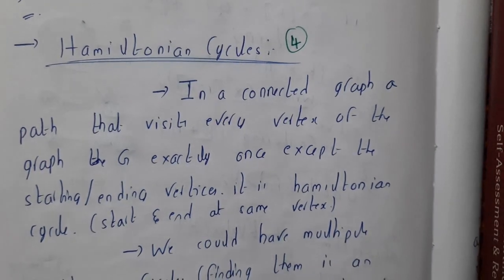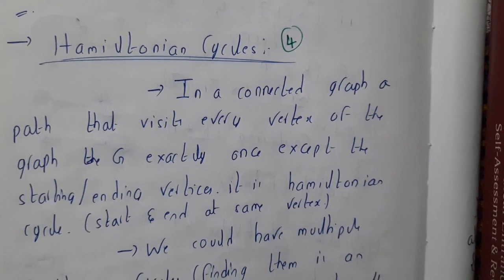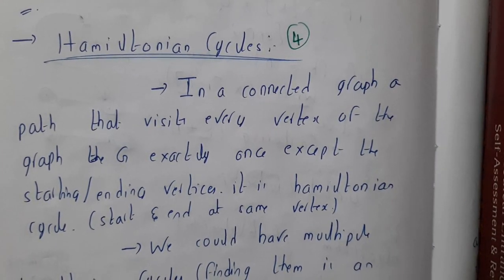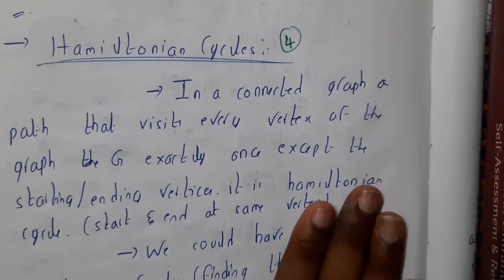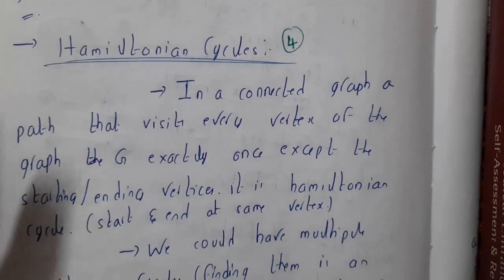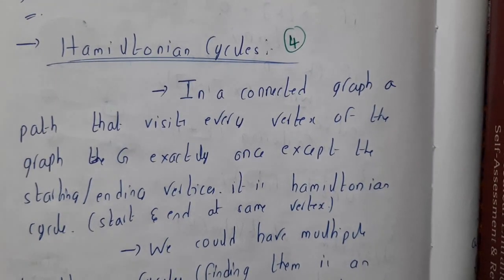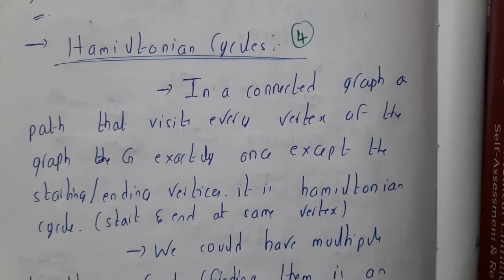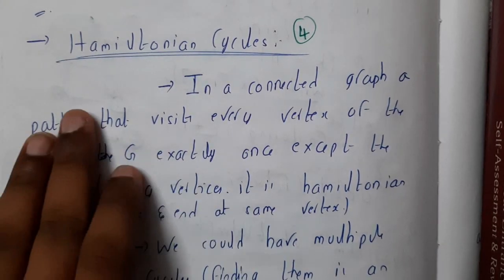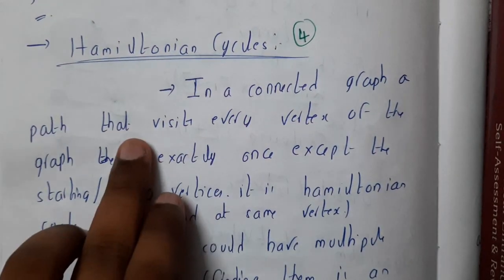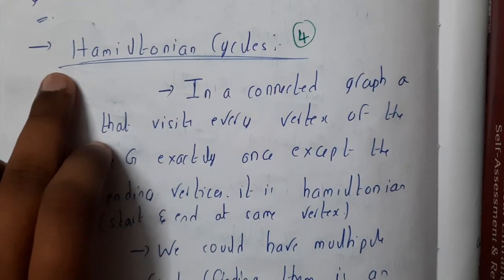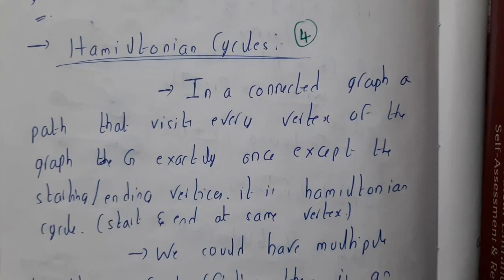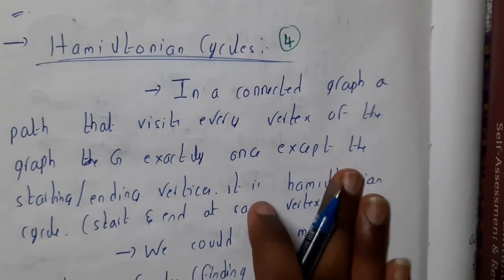Hello guys, we are back with our next lecture. In this lecture, let us go through the Hamiltonian cycle. This topic you will also be covering in graph theory. Basically, a Hamiltonian cycle is a particular path through which you will be visiting each and every vertex and coming back to the same vertex — that is the Hamiltonian cycle.